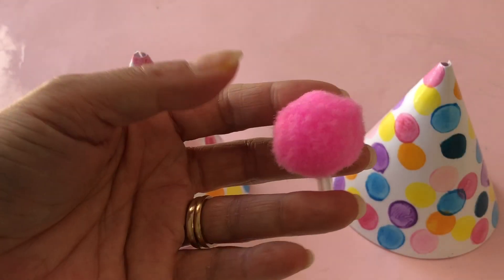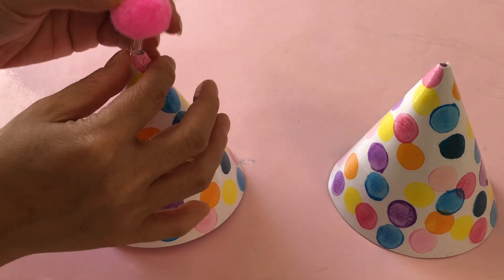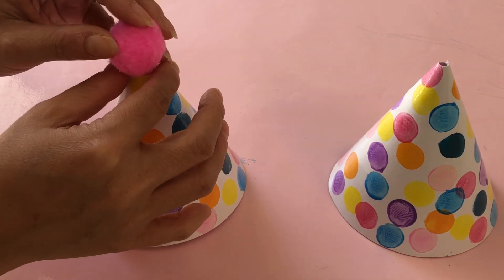We have pink pom-poms with clear tubing inside from a girl's necklace craft. Hot glue the tube into the hole we made earlier.